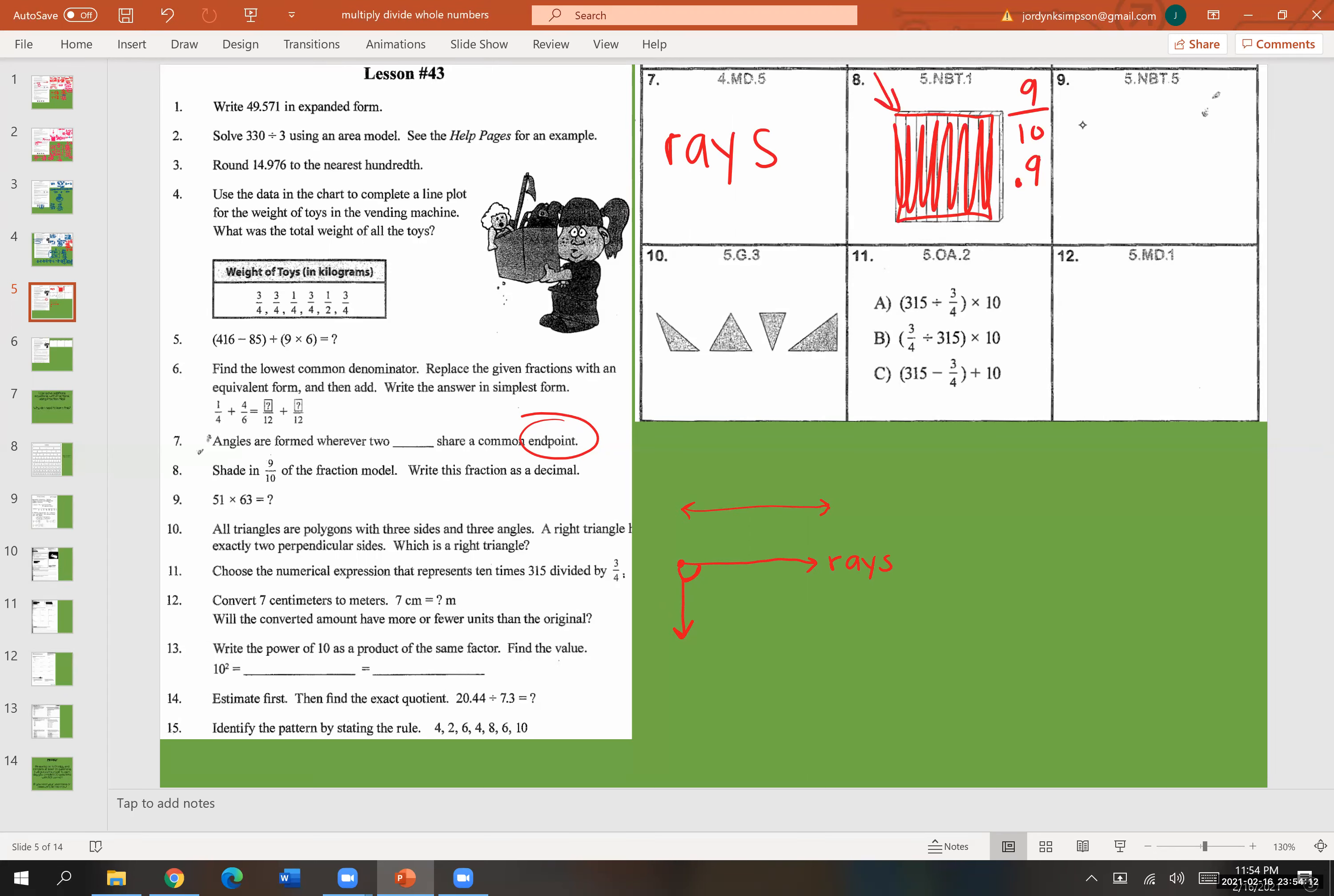Number nine, we are going to multiply 51 and 63. So one times three is three. Five times three is 15. Do not forget your place value zero. One times six is six. Five times six is 30. We are going to add three and zero is three. Five and six is 11. One and zero is two. And then three and nothing would stay three. So 51 times 63 is 3,213.